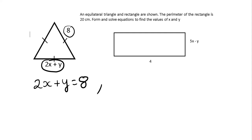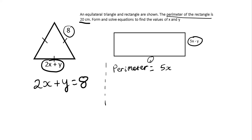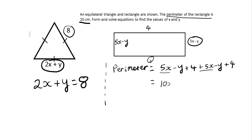For the rectangle, I know from the question that the perimeter is 20. So I'm going to write down an expression for the perimeter. An expression for the perimeter is going to be 5x minus y plus 4, plus another 5x minus y, because this side is also 5x minus y centimetres. If I simplify: 5x plus 5x is 10x, minus y take away y is minus 2y, plus 4 plus 4 is plus 8. So the expression for the perimeter is 10x minus 2y plus 8.